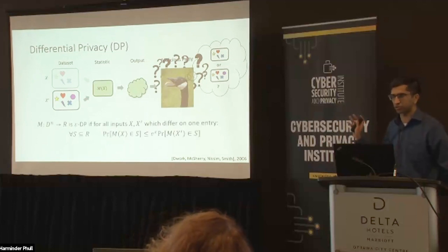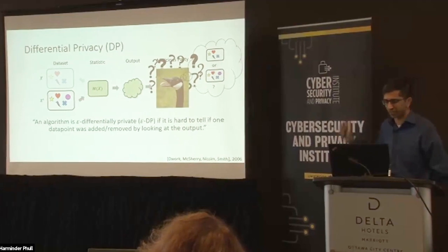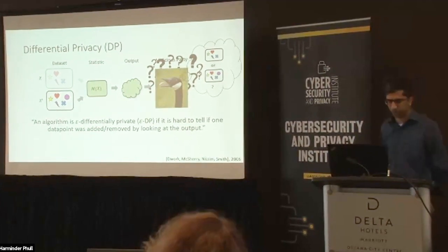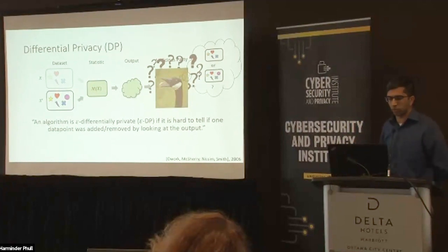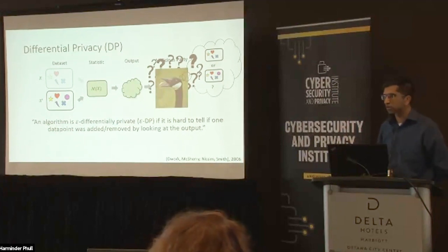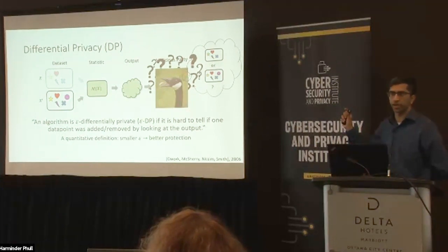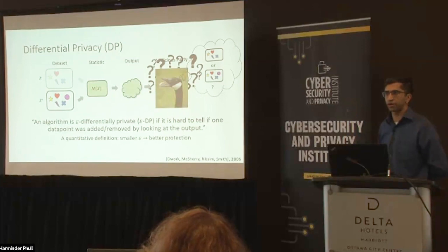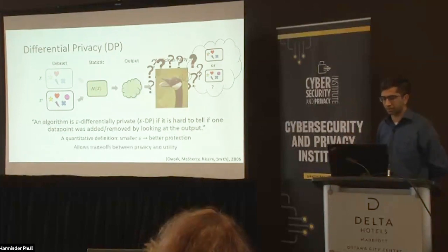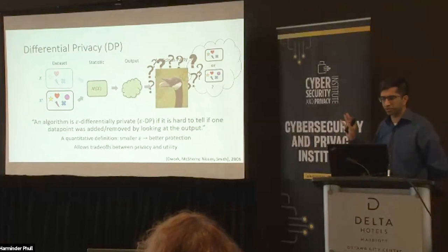There's a formal definition behind what differential privacy is. Roughly speaking, an algorithm or statistic is differentially private if it's hard to tell if one data point was added or removed solely by looking at the output of this statistic. This is a quantitative definition: epsilon is some number you can tweak higher or lower depending on how private you want your output to be. A smaller epsilon means it's more private; a larger epsilon means it's less private. This allows trade-offs between privacy and utility.